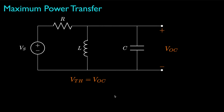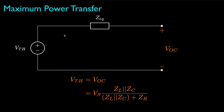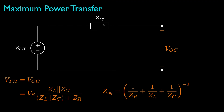Next, we determine the Thevenin voltage by evaluating the open-circuit voltage at the load terminals. To do that, we combine the inductor and capacitor in parallel, then use the voltage divider rule to find V_OC. Once we have both the equivalent impedance and the open-circuit voltage — the Thevenin voltage — we can replace the circuit with the Thevenin source in series with the Thevenin equivalent impedance.